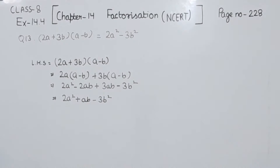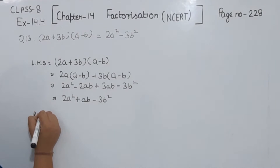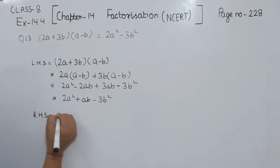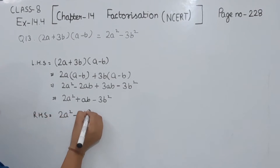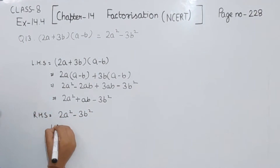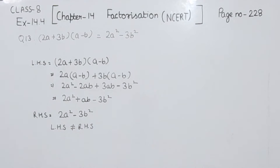Now we write the right hand side. The right hand side given is 2A² − 3B², which is not equal to the left hand side. That means the left hand side is not equal to the right hand side.